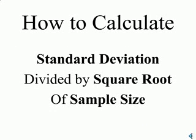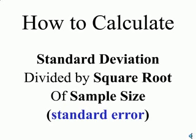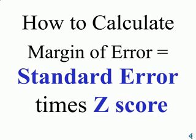Here's how to calculate. We take the standard deviation divided by the square root of the sample size. This gives us what is known as the standard error. The margin of error is simply going to be the standard error times the z-score.